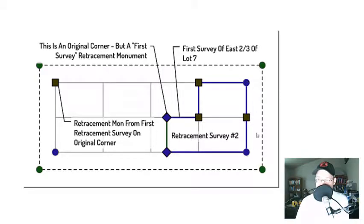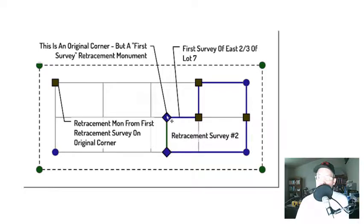It has two corners marked by original monuments from the original subdivision. It has three retracement monuments set on original corners. And then it has two monuments set on original corners — but original corners per the deed, not per the subdivision map. These are original corners created by the deed that conveyed the east two-thirds of lot seven from the owner of the four lots to Mr. Conno.